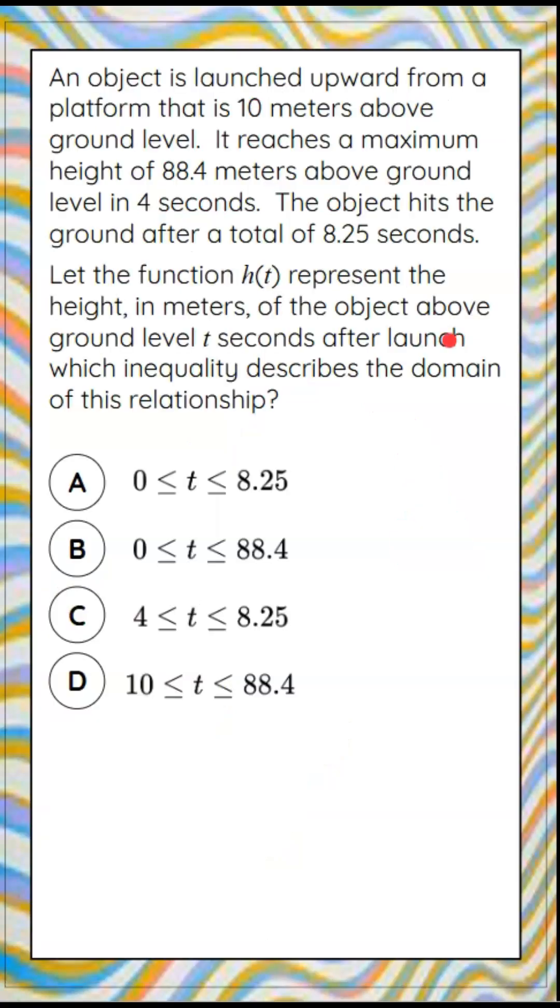Here's our question. We have an object that is launched upward from a platform that is 10 meters above ground level. It reaches a maximum height of 88.4 meters above ground level in 4 seconds. The object hits the ground after a total of 8.25 seconds.